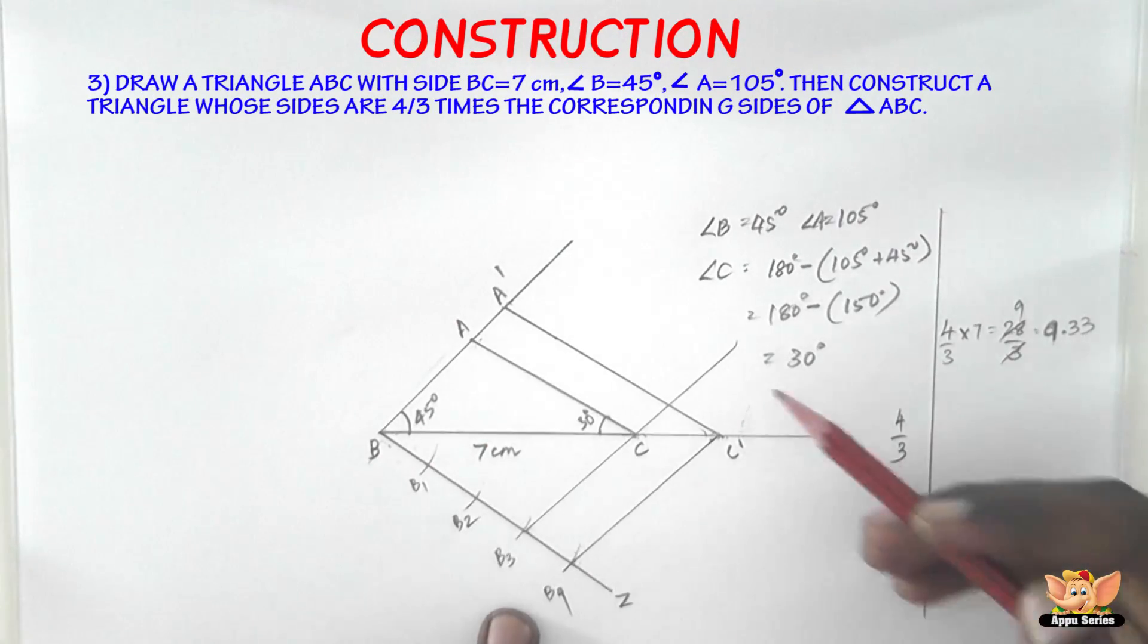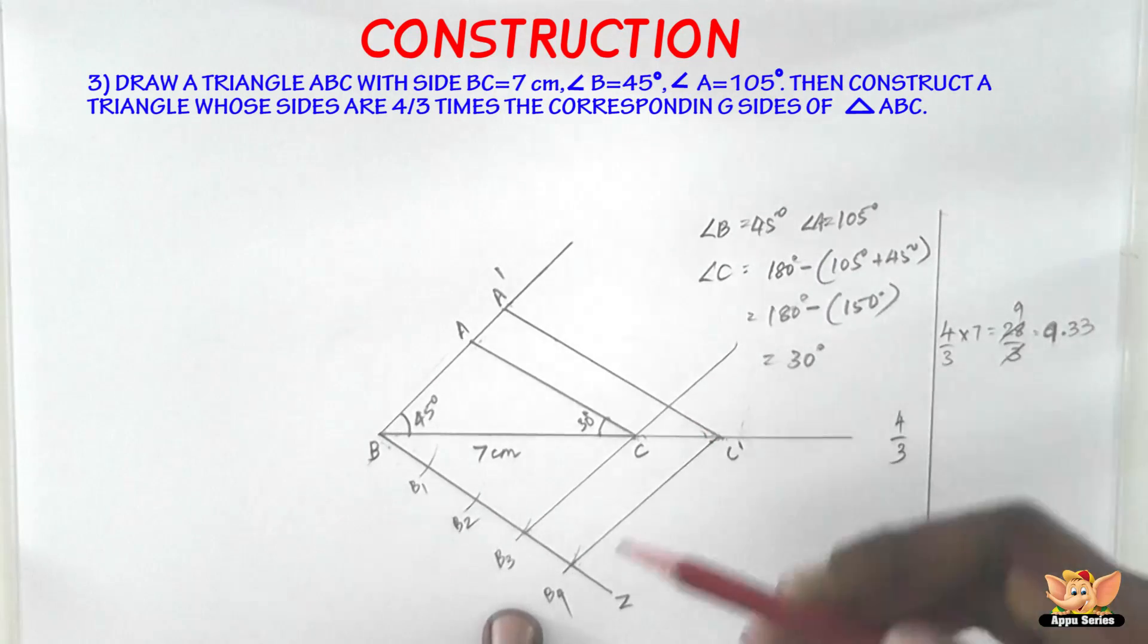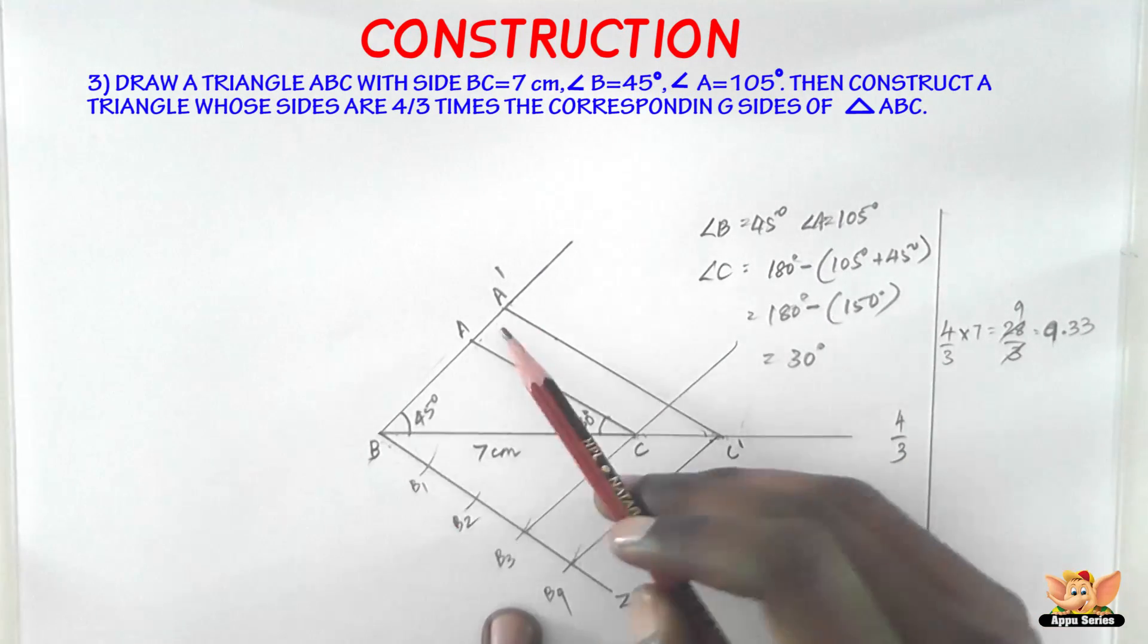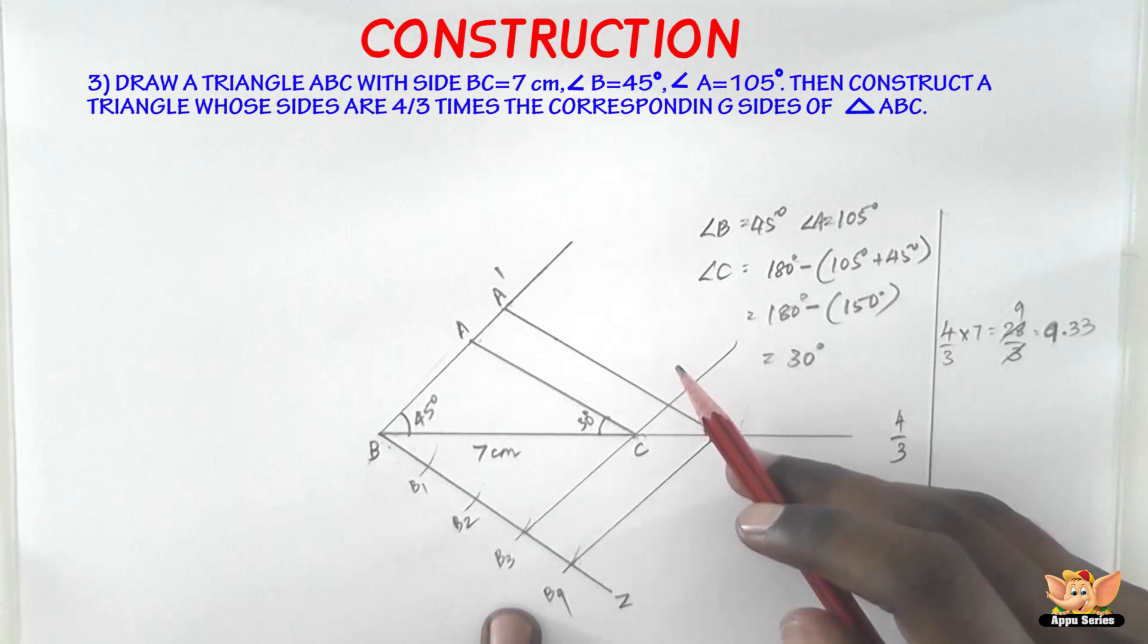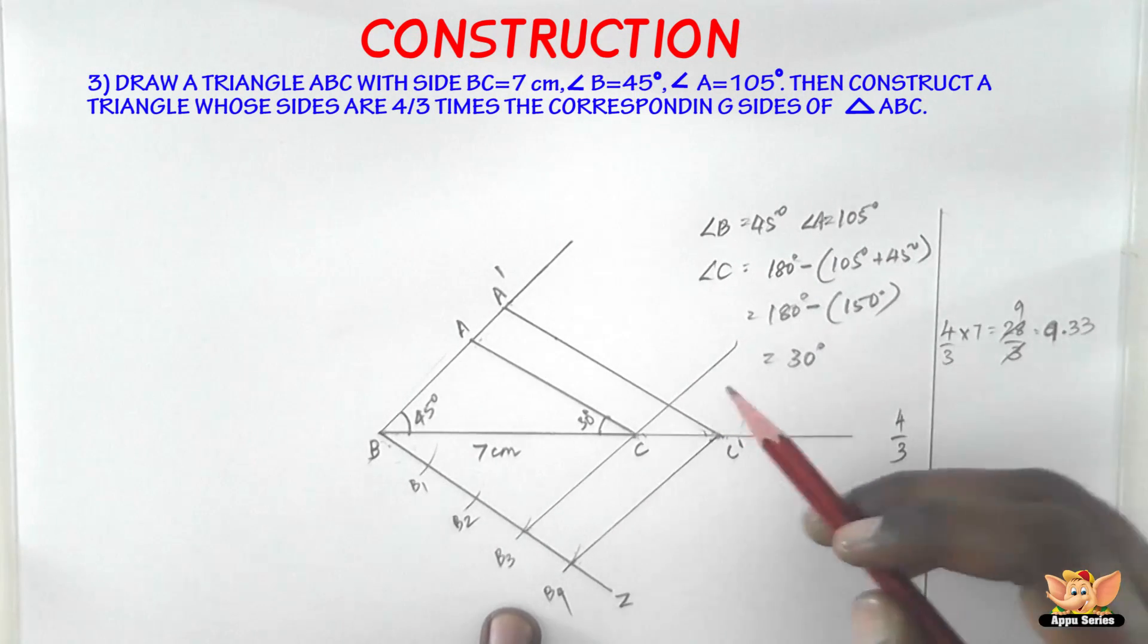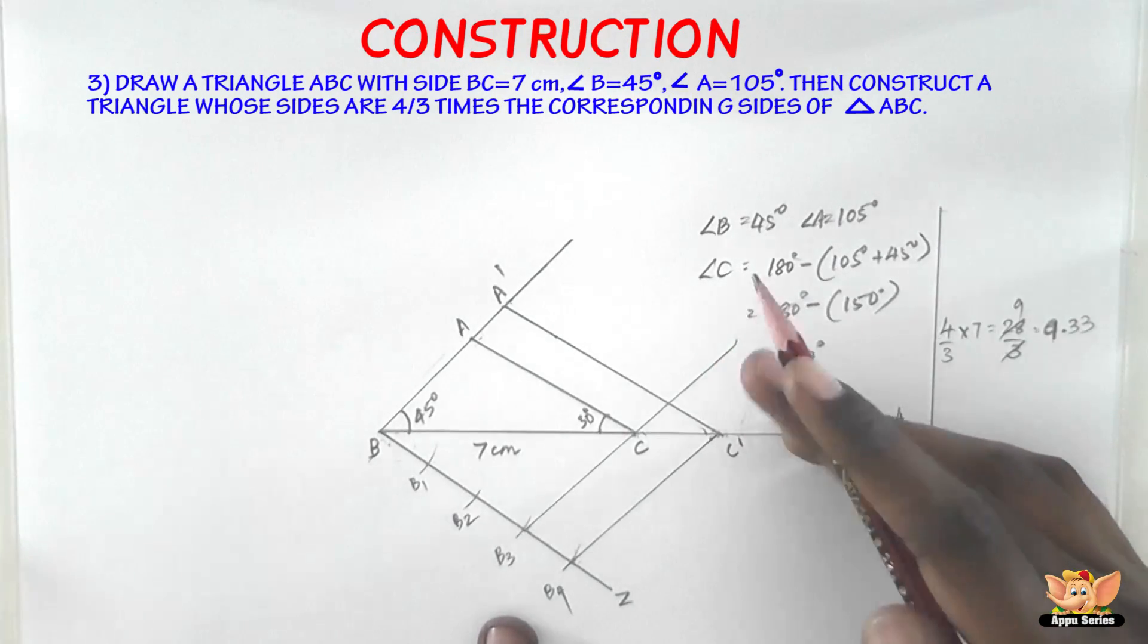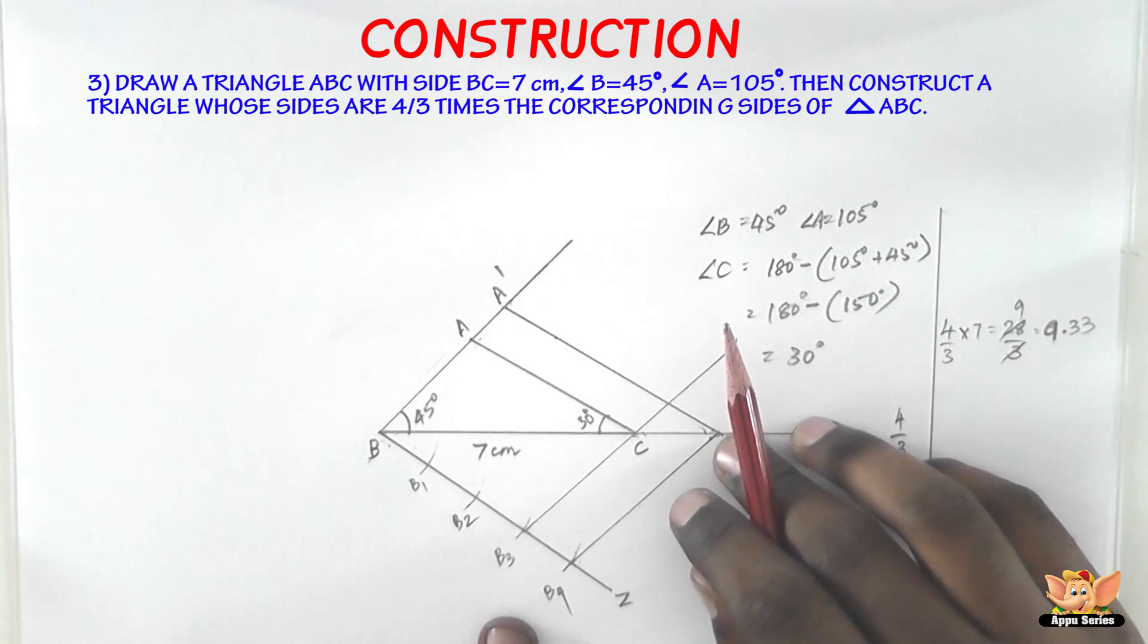BA'C' or A'BC' is the triangle that we needed. So the triangle A'BC' has got sides whose measurements are 4 by 3 times the corresponding sides of the triangle ABC. So this is how we construct a triangle similar to any given triangle.